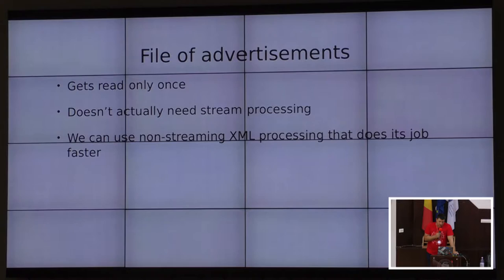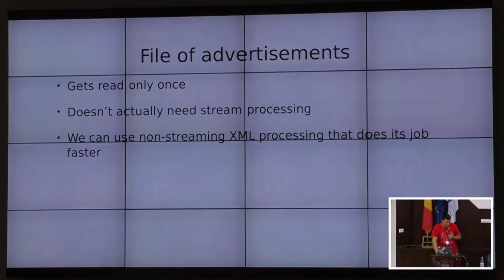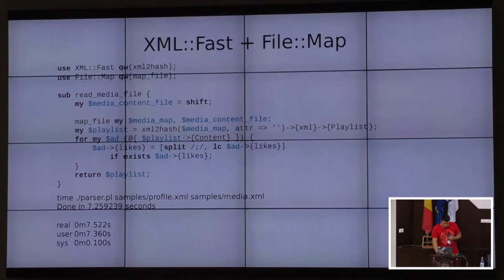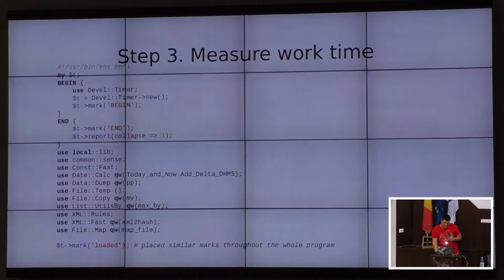The file of advertisements only needs to be read once. The XML::Rules module does stream processing, and I initially thought we could get some advantages from that, but we actually couldn't and didn't need it. So I decided to try using a non-streaming XML processing module that could be a bit faster. I decided to use the XML::Fast module, the version from GitHub, because the one on CPAN is a bit outdated. After I started using it, run time increased again, but as we'll see later, it would help us anyway.